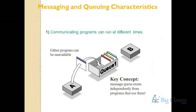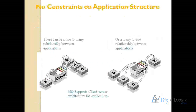IBM MQ server enables reliable messaging service between two distributed systems. Reliable messaging means communication can happen without data loss and without data duplication. IBM MQ supports one-to-one communication, one-to-many communication, many-to-one communication, and many-to-many communication. The outcome is IBM MQ supports program-to-program communication, system-to-system communication, and end-to-end communication.